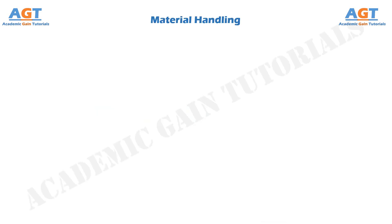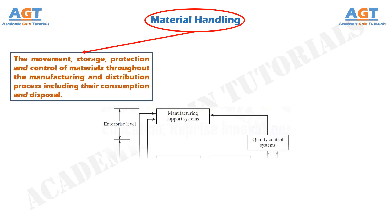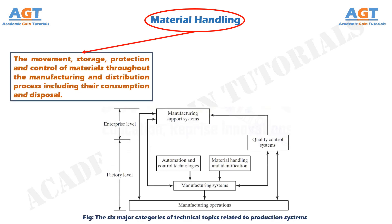Material handling is the movement, storage, protection and control of materials throughout the manufacturing and distribution process, including their consumption and disposal. The handling of materials must be performed safely, efficiently, at low cost, in a timely manner, accurately — the right materials in the right quantities to the right locations.